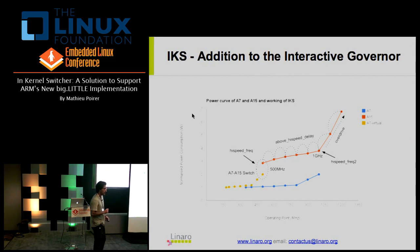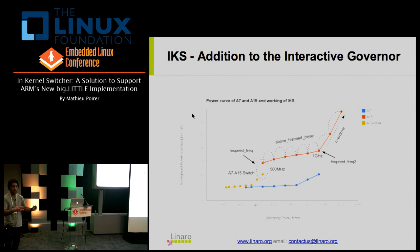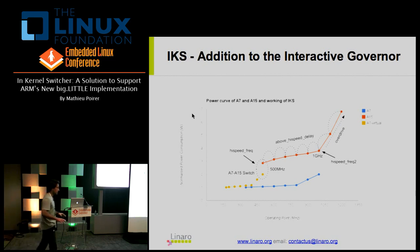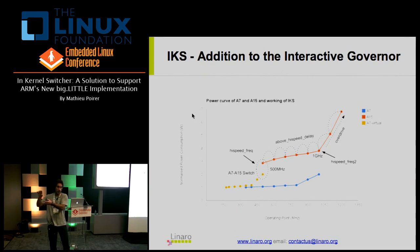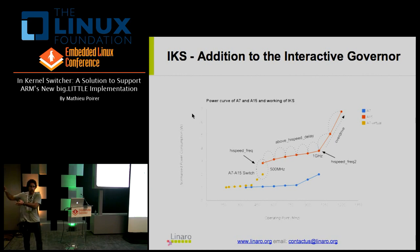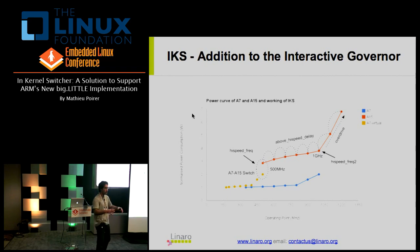In its original form, the interactive governor responds to system load: if load exceeds a threshold, it jumps to a certain frequency and slowly ramps up from there. This works well, but in our case each virtual core contains two physical CPUs. So we needed to shield the highest operating points — the most power-costly ones on the big core — just as the CPU frequency driver does. We introduced a second high-speed frequency variable that does the same thing as the first, preventing the governor from reaching the overdrive point on the A15.